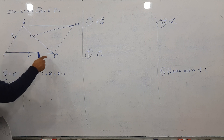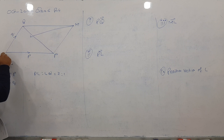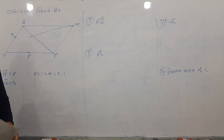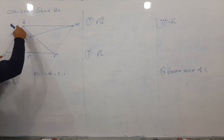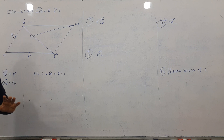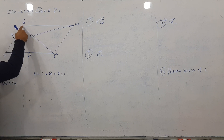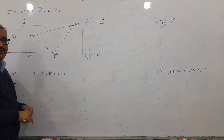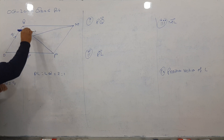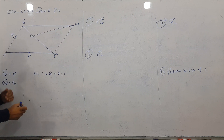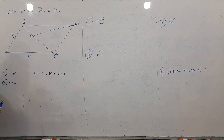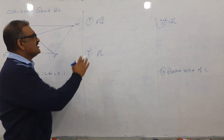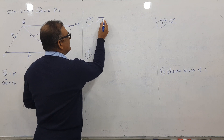In a parallelogram, the criteria is that opposite sides are equal in length and in the same direction — meaning they are parallel and equal, so they are the same vectors. So if this is Q, I can also call the opposite side Q, and same for P. When I go backwards, the sign changes — so backward P becomes minus P.